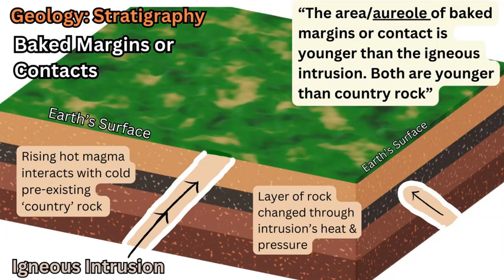The principle of baked margins or contacts is in direct connection with another principle called crosscutting relationships. Crosscutting relationships is where you have an igneous intrusion coming from deeper below the Earth, and this magma is rising up through the pre-existing layers of rock — mostly sedimentary — towards the surface as a plutonic intrusion.